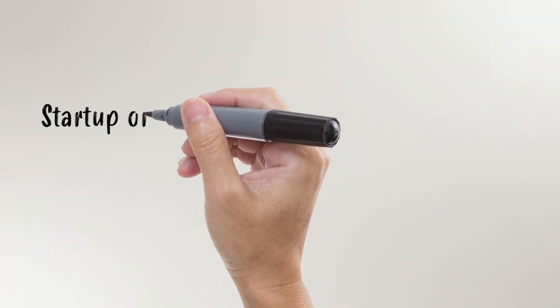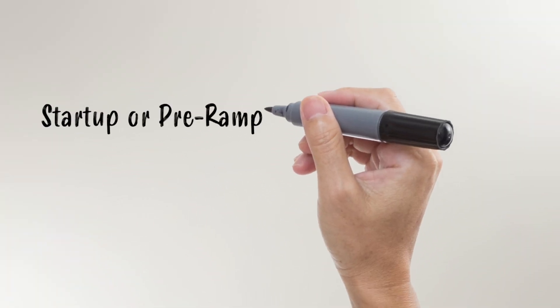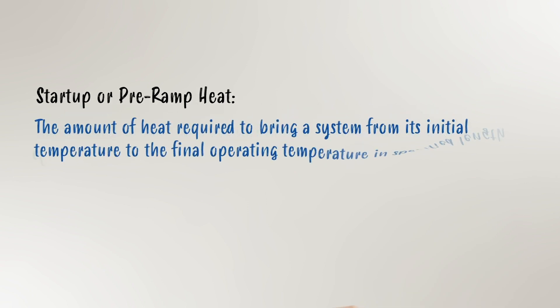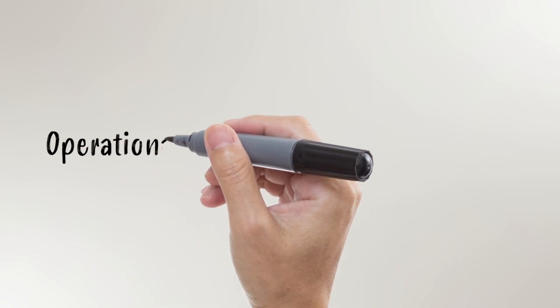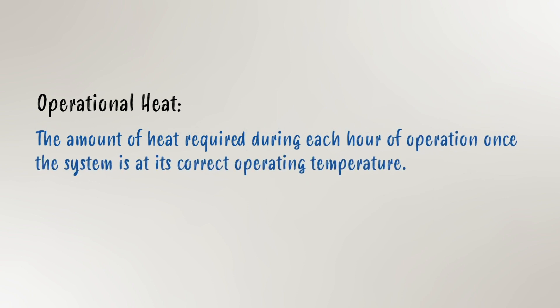First, I want to talk about the difference between startup and operational heat requirements. Startup, or preheat, is defined as the amount of heat required to bring a system from its initial temperature to the final operating conditions in a specified length of time — think of it like preheating your oven before you bake a batch of cookies. Operational heat is defined as the amount of heat required per unit of time, usually an hour, once the system is at its specified operating temperature. The majority of the energy is on the operational side, so our focus will be determining the kilowatts required on this portion of the equation.